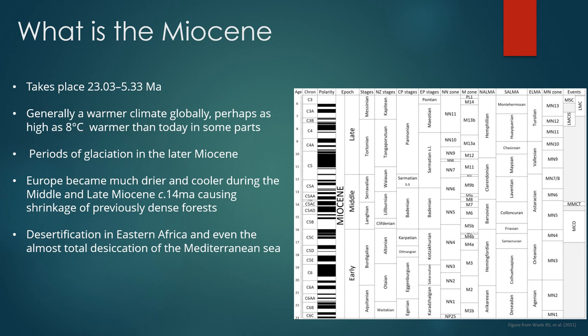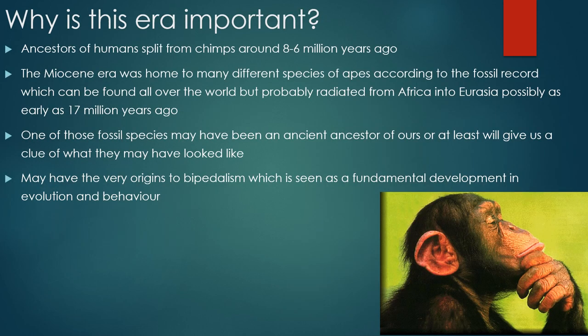Environmental conditions seem to deteriorate globally. Europe, for example, became much drier and cooler during the middle and late Miocene around 14 million years ago, which started the shrinkage of previously dense forests. In eastern Africa there was desertification, and even the almost total desiccation of the Mediterranean Sea. There were some particularly cataclysmic events during this expanse of time which would have had an impact upon the types of apes we see during this period.